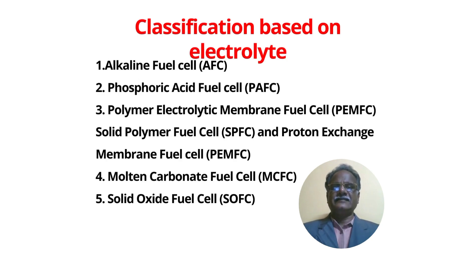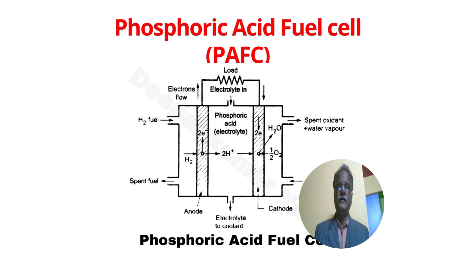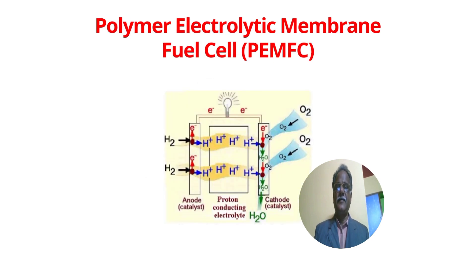Classification of fuel cells based on electrolyte can be made as follows. This is a schematic representation of an alkaline fuel cell or hydrogen fuel cell. This is a schematic representation of a phosphoric acid fuel cell. This is a schematic representation of a polymer electrolytic membrane fuel cell.